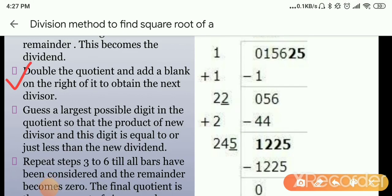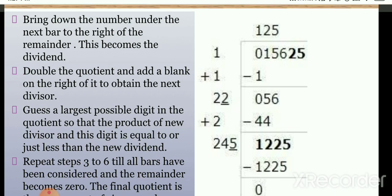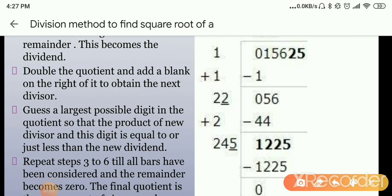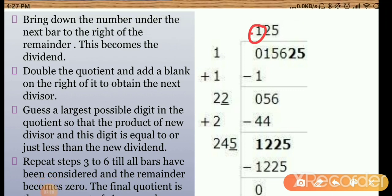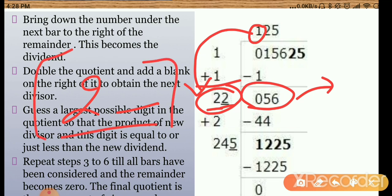Step 5: Double the quotient and add a blank on the right of it to obtain the next divisor. Our quotient was 1, and double of 1 is 2. So we write 2 with a blank — written as '2_' — and this becomes our new divisor.